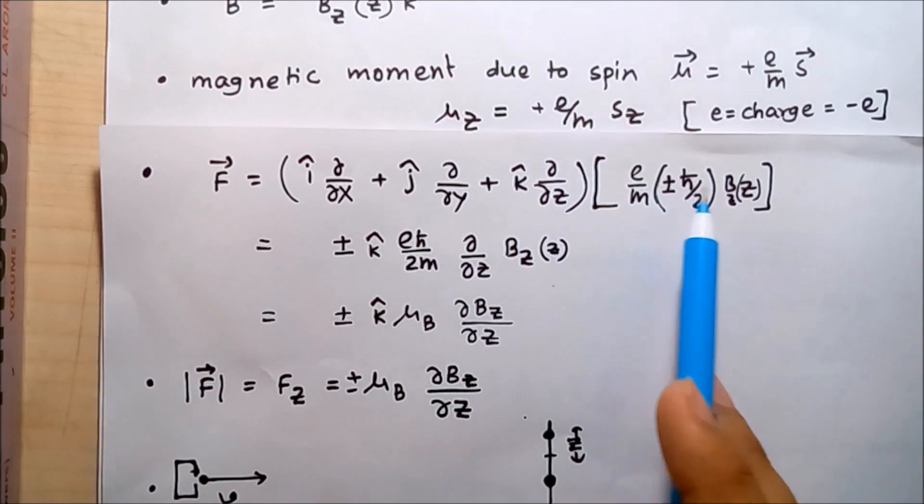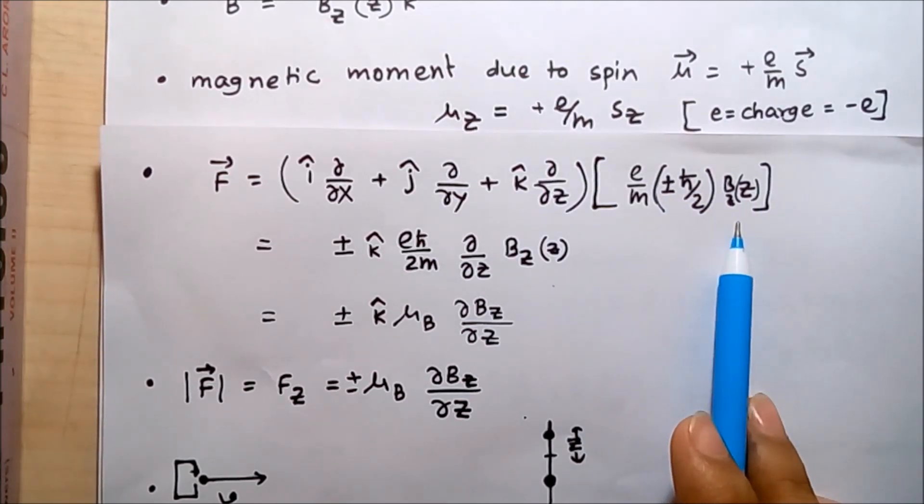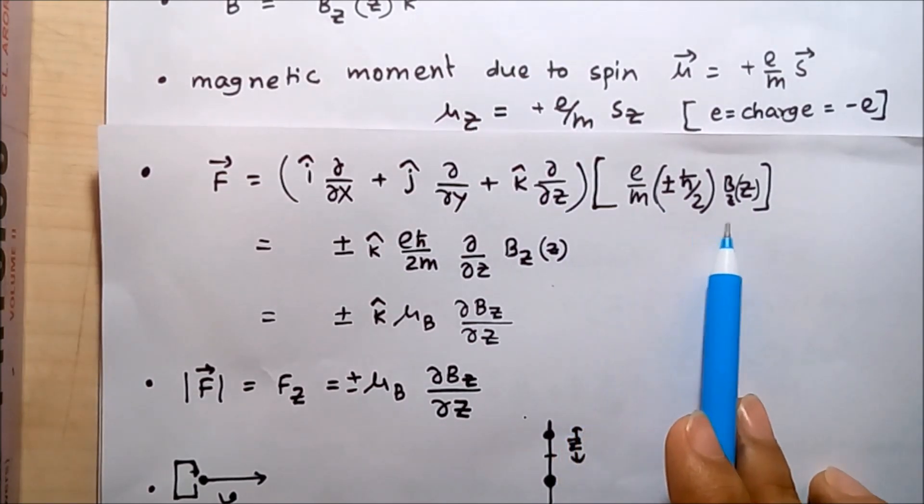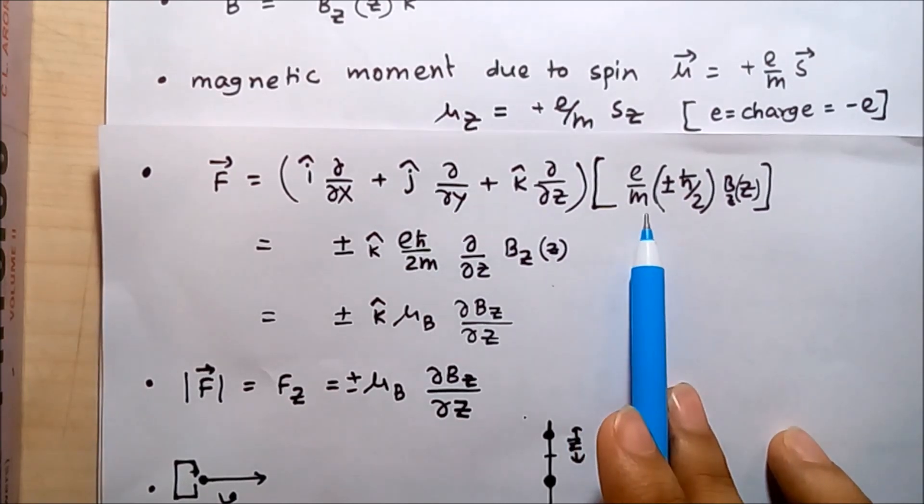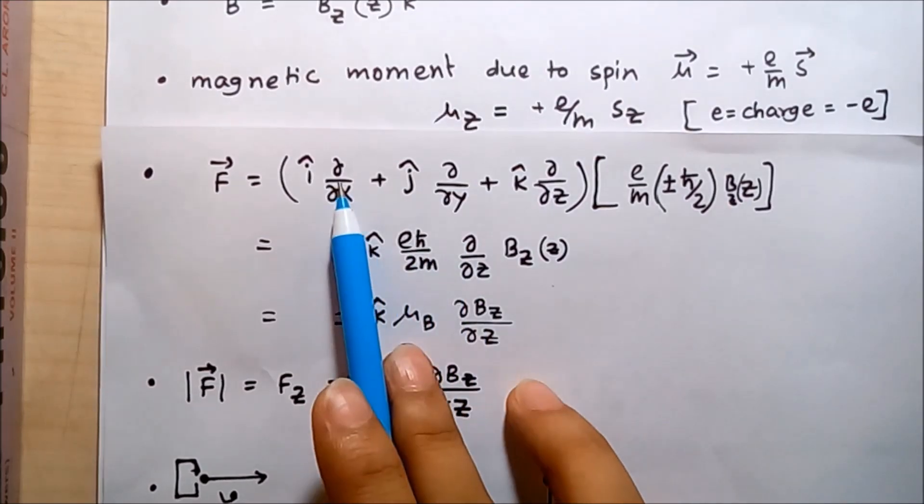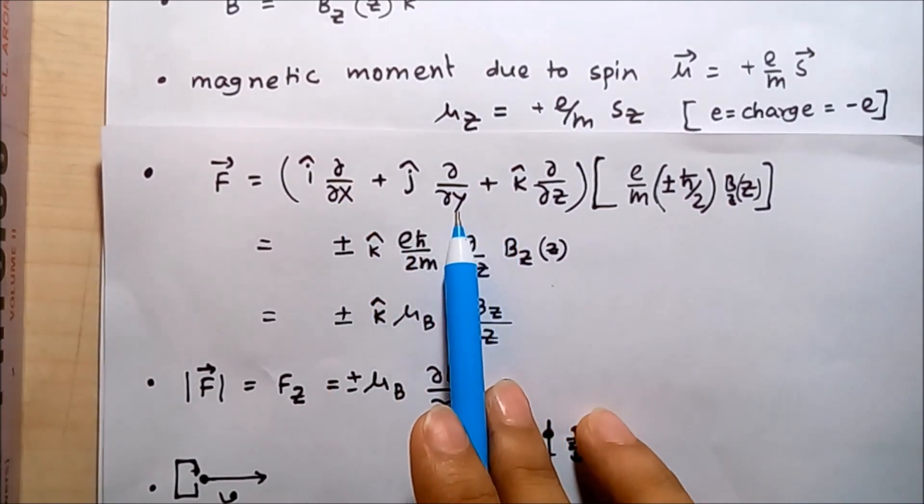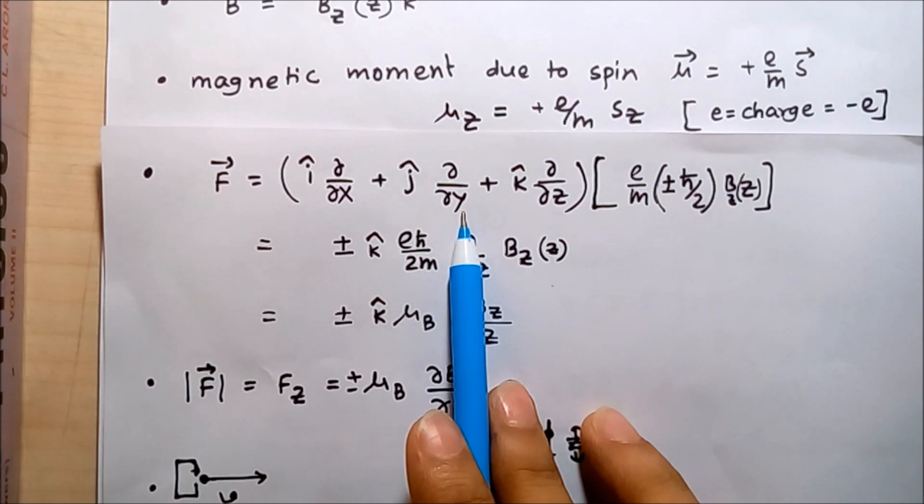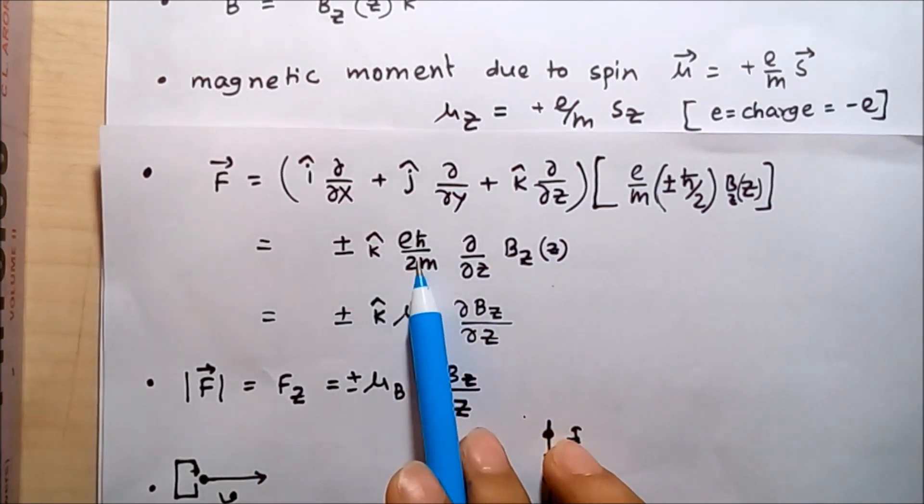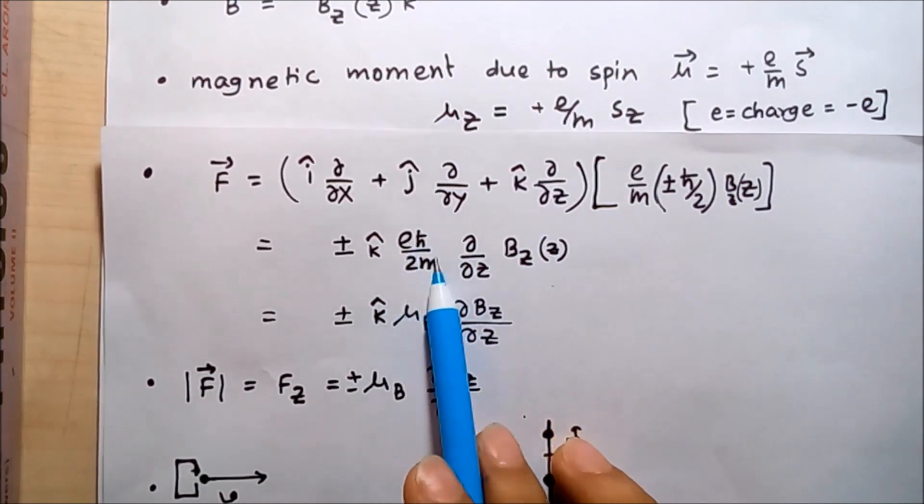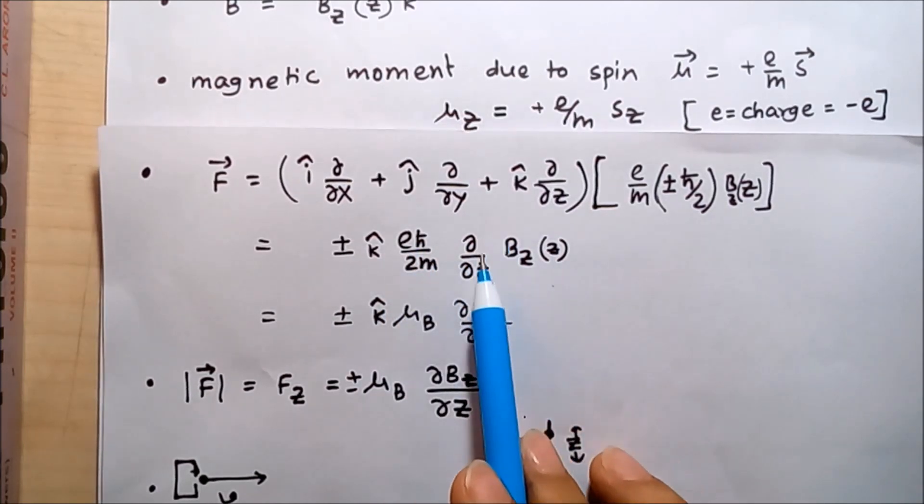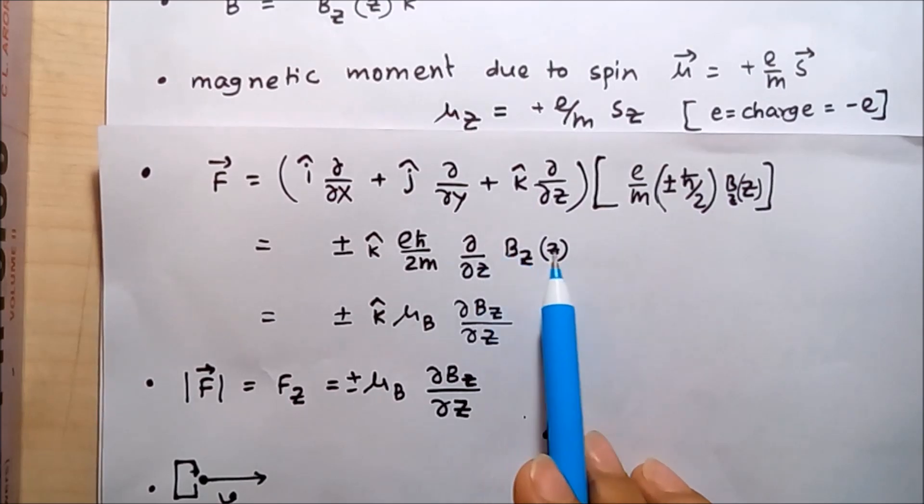Now as this total term does not contain any function of x or y, these two terms will give zero value and the force turns out to be k-hat times all the constants, that is e h-bar by 2m times del/del Z of B_Z, as B_Z is the function of only Z.